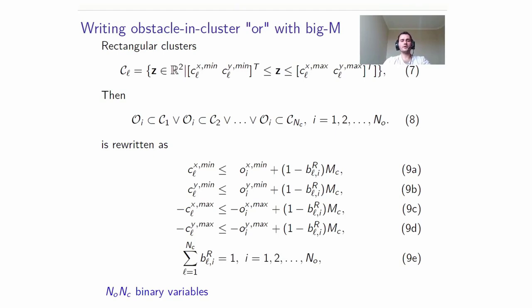This kind of obstacle in cluster OR constraints can also be dealt with using the big M approach. Now consider that a cluster CL is given by this expression, that the cluster CL must be to the left of the obstacle leftmost side, CL must be lower than the obstacles lower side, and so on. Since each cluster and each obstacle that is assigned is a decision problem, we have associated binary variables, and we relax these constraints with this big M approach.